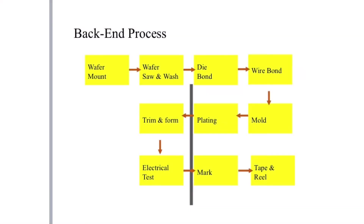The main back-end sub-processes are: first, wafer mount; after that, wafer saw and wash; then die bond; after that, wire bond; after that, mold; then plating; trim and form; electrical test; mark; and lastly tape and reel.